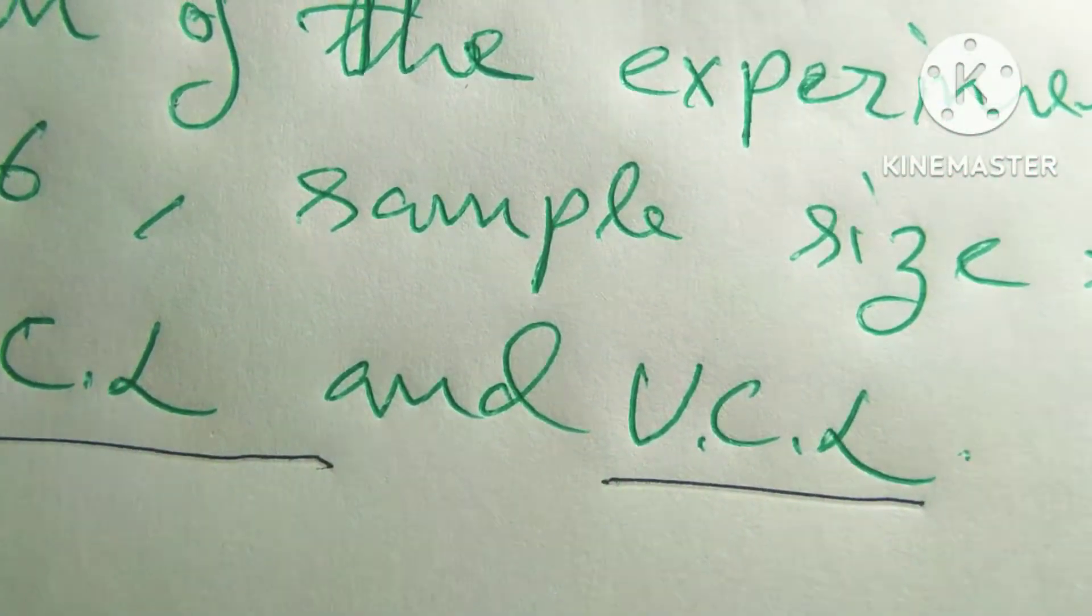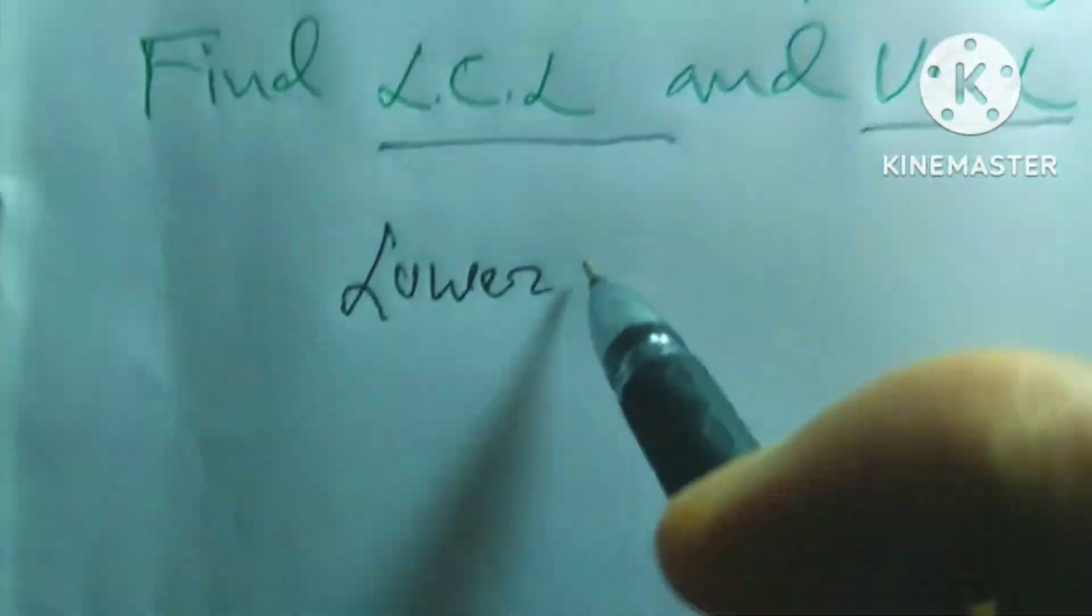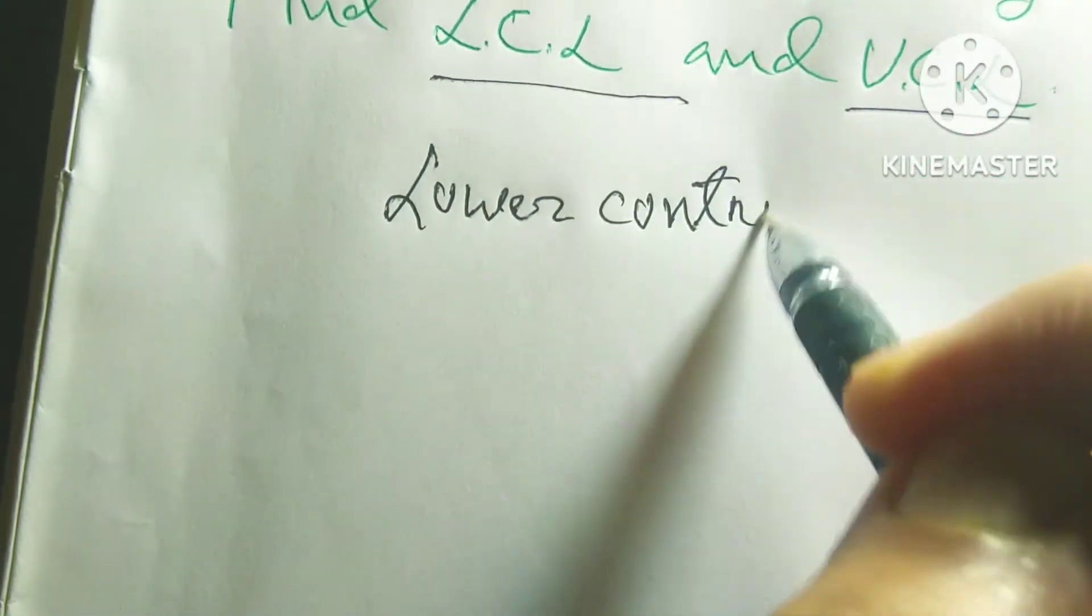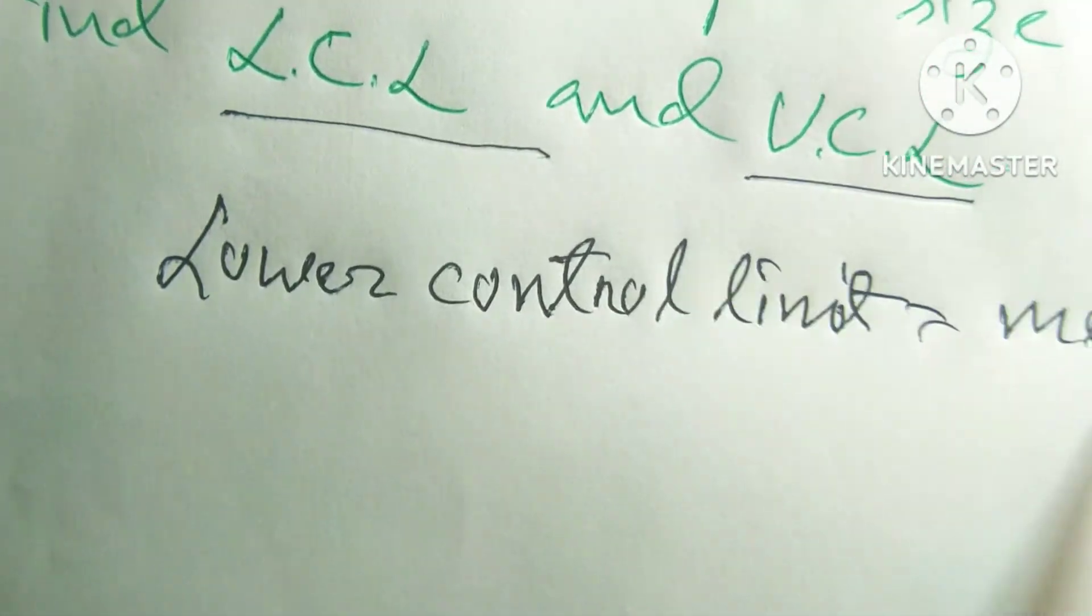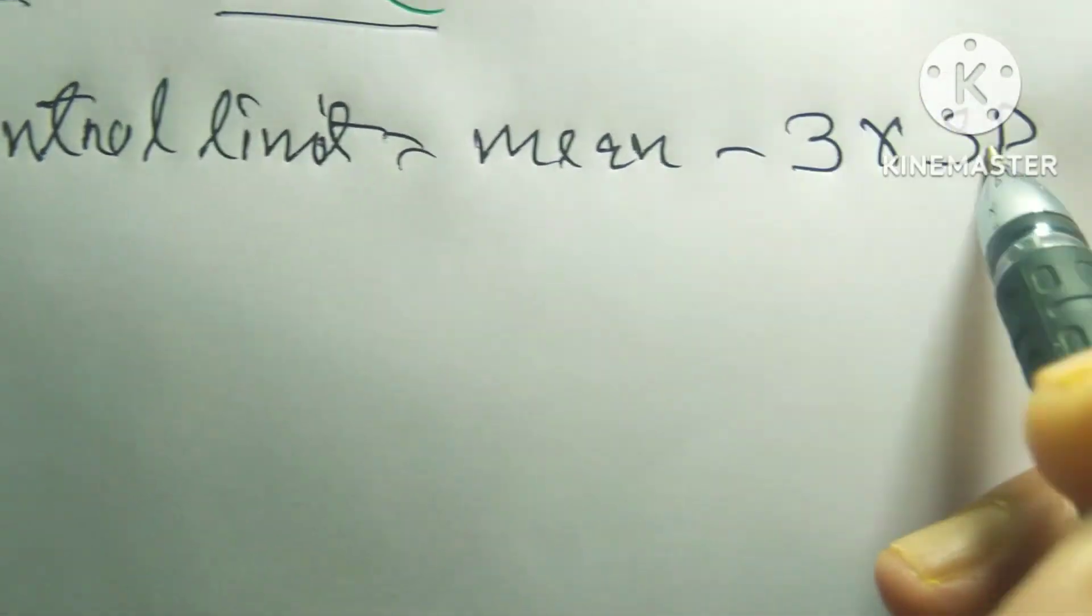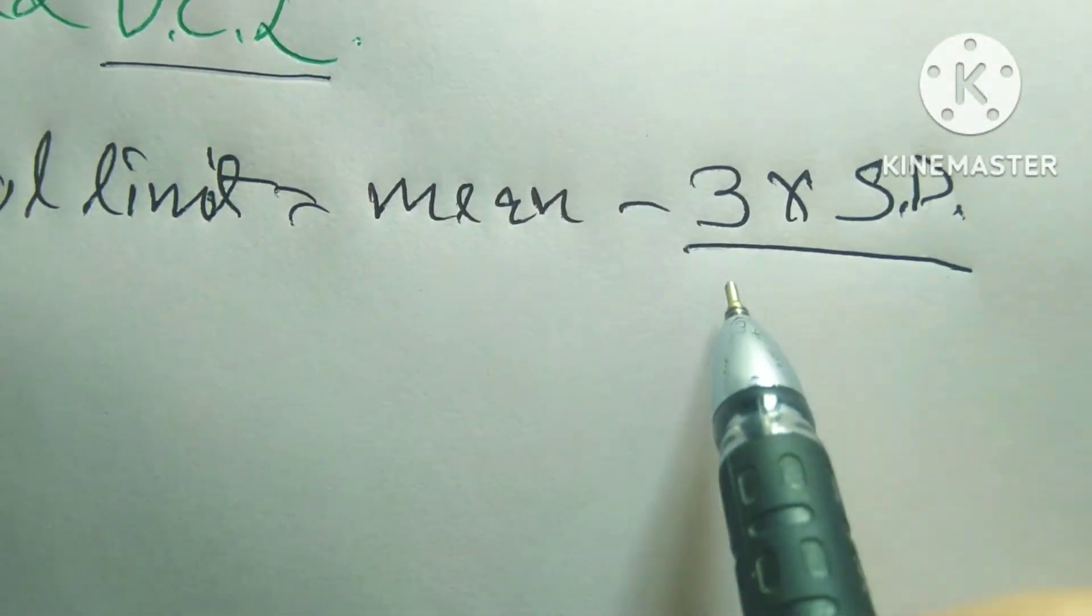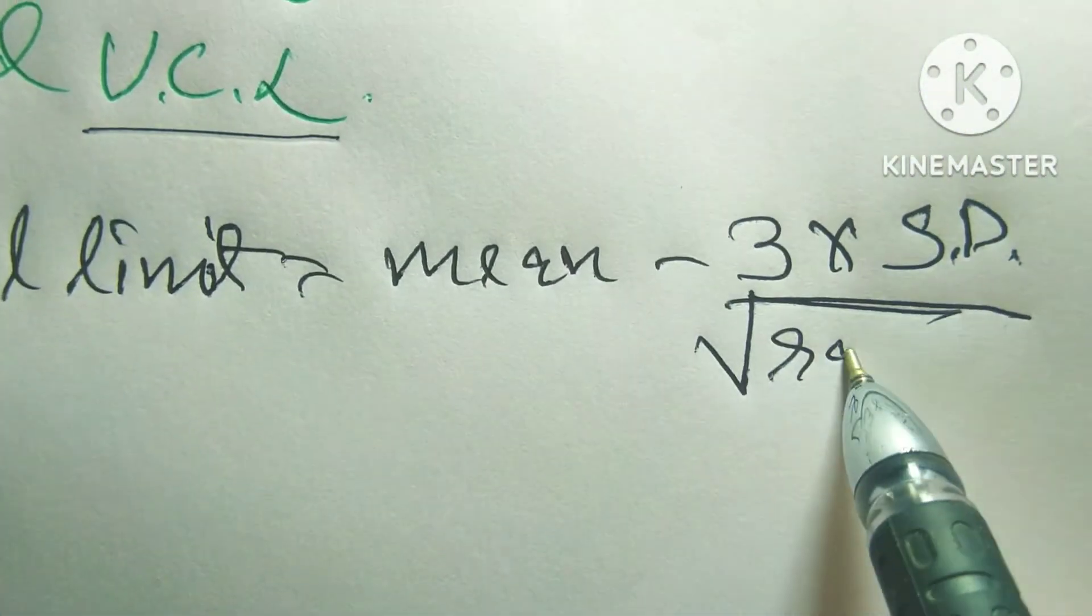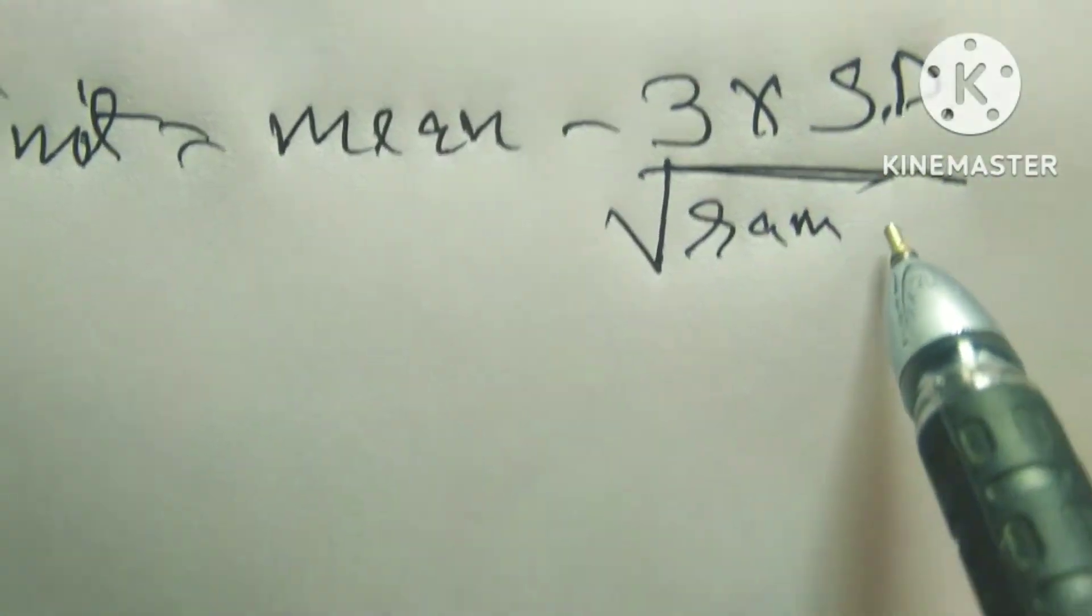So friends, lower control limit equals to mean minus 3 into standard deviation divided by root over sample.